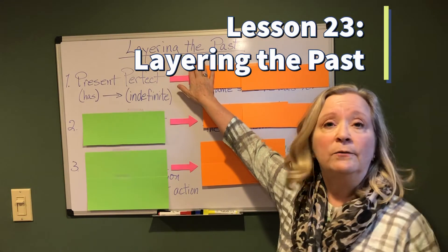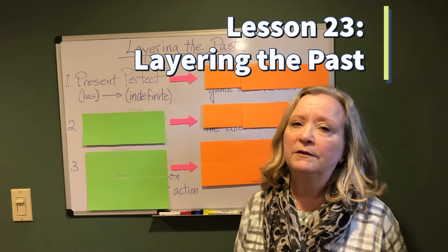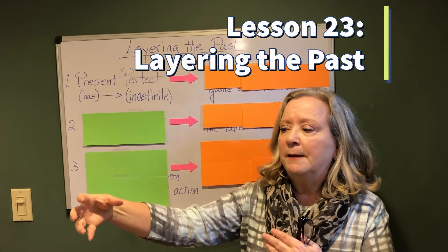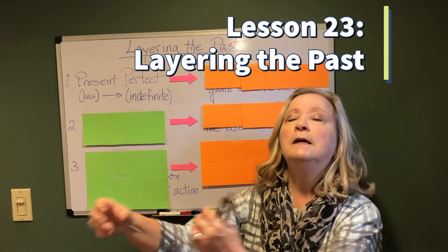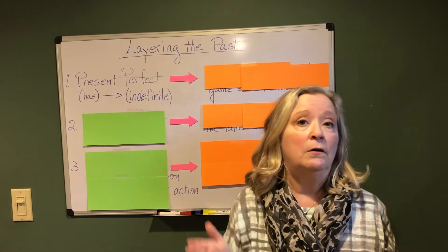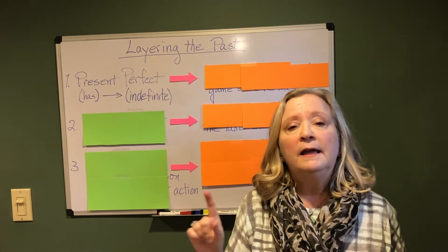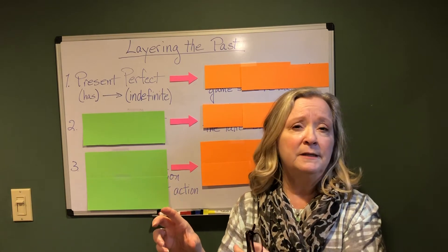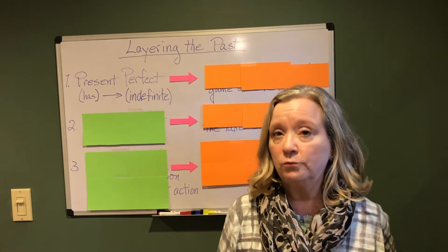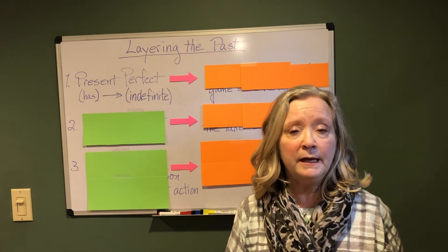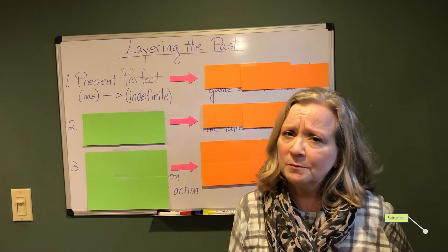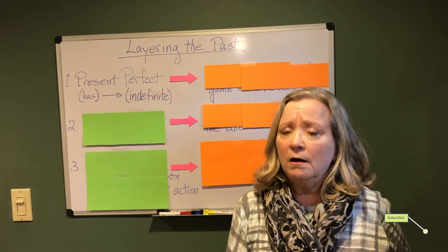Today's lesson is layering the past. You might not really be aware of this, but it is true that we talk about events in the past as being something very far back that happened before another thing happened in the past. We also talk about things that we don't know when they began in the past. It is common in our casual speech that we don't bother with a lot of these tenses and we certainly don't use them correctly, but in your college papers now you are going to elevate your language.